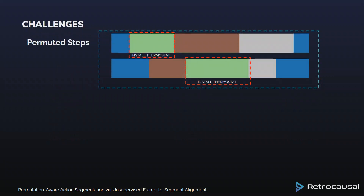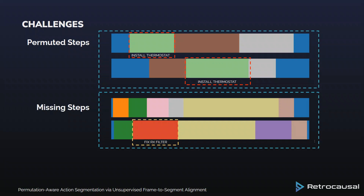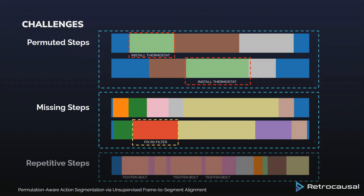A key challenge for state-of-the-art unsupervised action segmentation approaches is being resilient to changes in the order in which actions are performed across the dataset. In the first example depicted here, the install thermostat action is the second step in the activity, whereas in the second example it is the third step. Another challenge is that of missing actions in activity sequences — for example, the action segment fix rx filter does not appear in the first activity depicted here. Unsupervised action segmentation methods also need to distinguish between repeated instances of an action and treat them as separate segments; for example, the tighten bolt action appears several times in an activity.